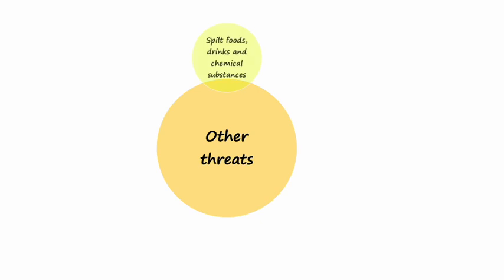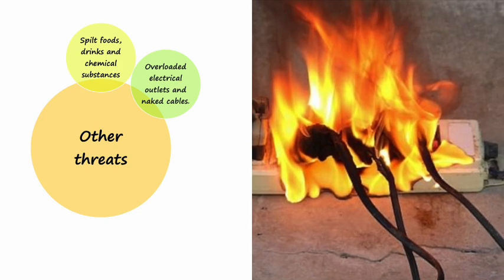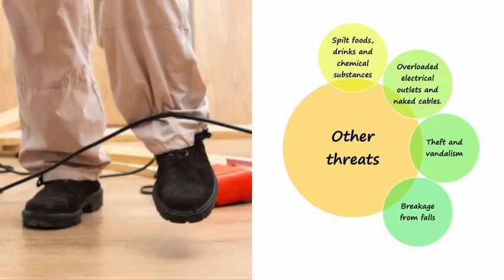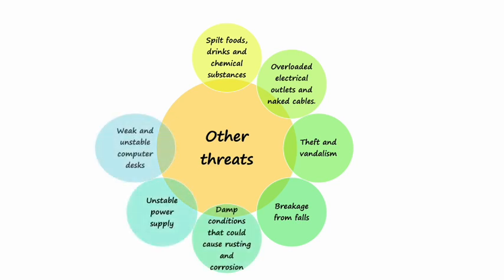Other threats include: spilt foods, drinks, and chemical substances such as sanitizers, which can cause damage to computer parts such as the keyboard, mouse, and monitor. Overloaded electrical outlets, loose and naked cables that could cause electrical fire, theft and vandalism, breakage from falls — which could be caused by cables running across the floor — damp conditions that could cause rusting and corrosion, unstable power supply, weak and unstable computer disks, and a dusty environment.